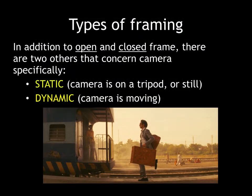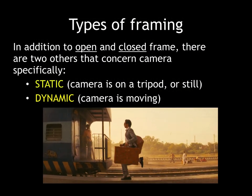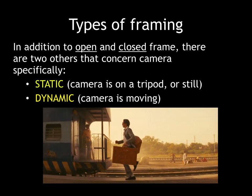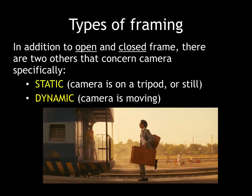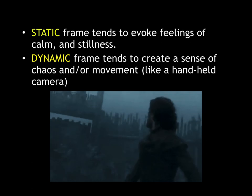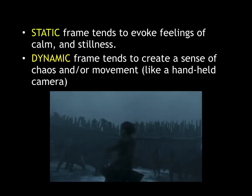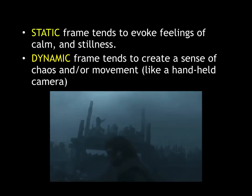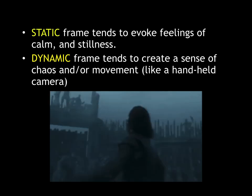In this chapter, one of the main things you should learn to do is differentiate between shots that are moving and shots that are not moving. Shots that don't have any movement are called static frame, and shots that show some motion are called dynamic frame. Static frame tends to evoke feelings of calmness or stillness, while dynamic frame tends to create a sense of chaos and movement — think about films shot with a handheld camera.